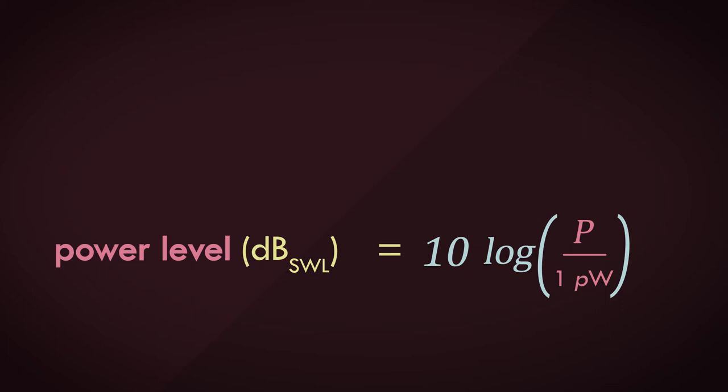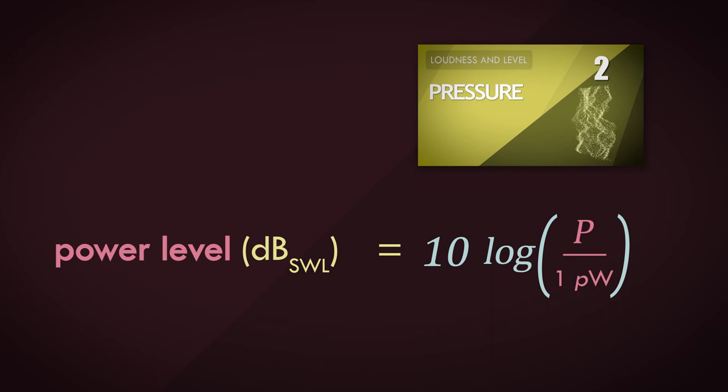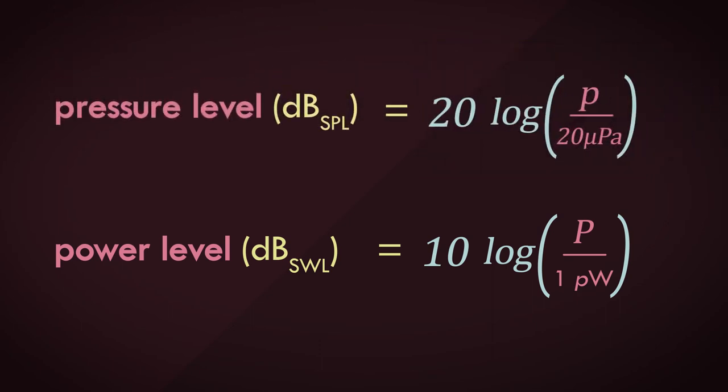But wait, if you watched the previous video, we derived the sound pressure level, or SPL, and it had this formula. Why is one value multiplied by 10 and the other by 20? It's a bit confusing, isn't it?